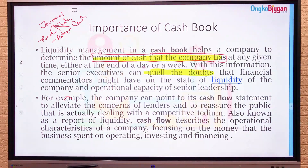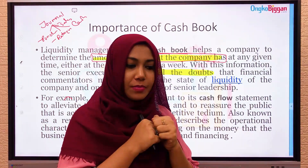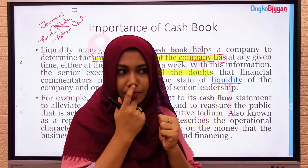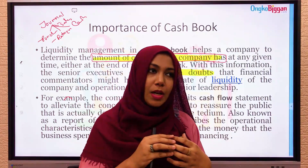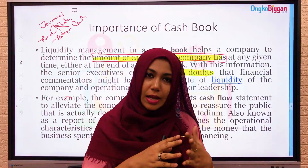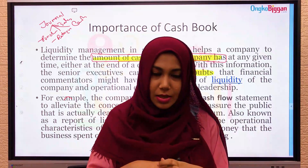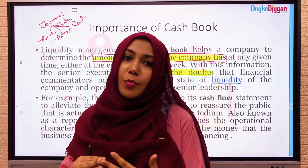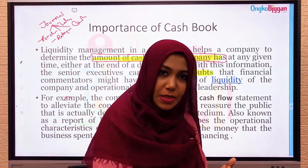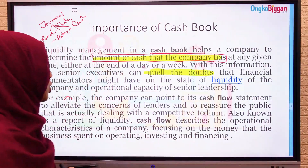For example, a company can point to its cash flow statement to reassure lenders and the public. Recently, a well-known local online company claimed people could invest in their business and they would be paid back — but after people invested, the business vanished. This happened because of improper management and no proper sense of how to run a business.